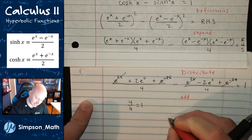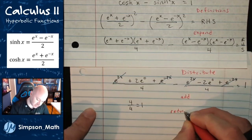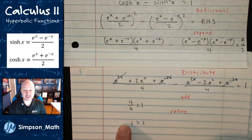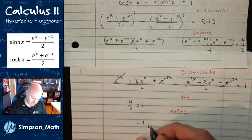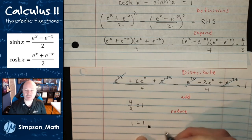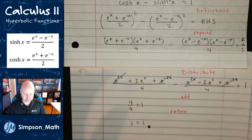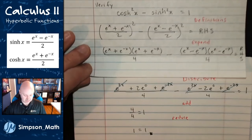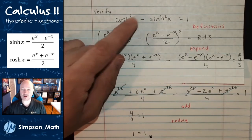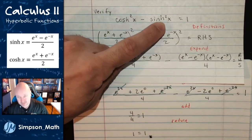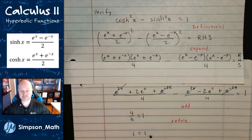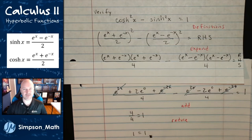One last step — reduce: 4/4 = 1. One equals one. Because the left-hand side is identical to the right-hand side, I'm finished. QED. I have shown that the difference of hyperbolic cosine squared and hyperbolic sine squared is always going to be 1.